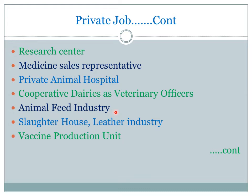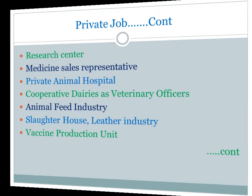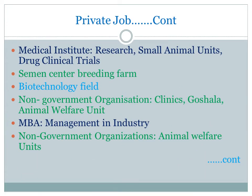Cattle feed, poultry feed, dog feed industries are growing. Private slaughterhouses require veterinarians for inspection of meat, mutton, leather, etc. Private vaccine production units also require veterinarians for vaccine production.